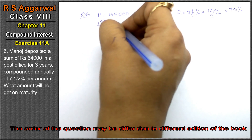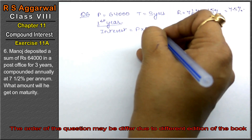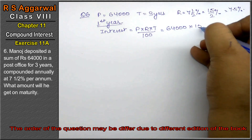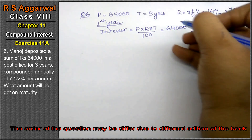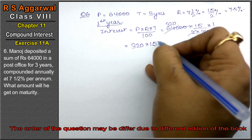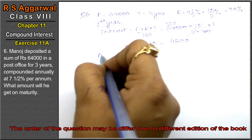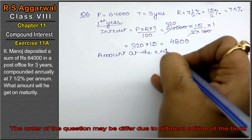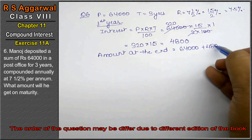First year: we will find the interest. Interest equals P into R into T upon 100. P is 64,000, R is 15 upon 2, T is 1 year. After cancellation, we get interest of 4,800. So, amount at the end of first year equals 64,000 plus 4,800, that is 68,800.